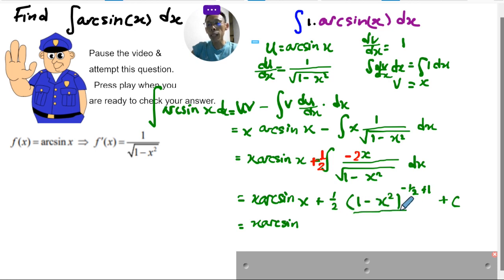So this is going to be x arcsin x plus this one is to the power of half, so 1 minus x square plus c.